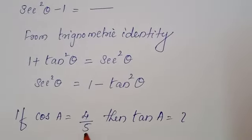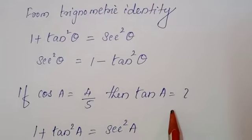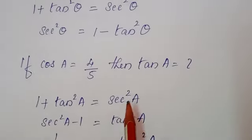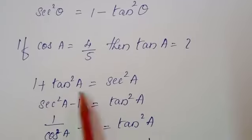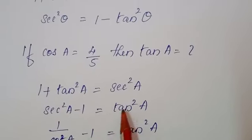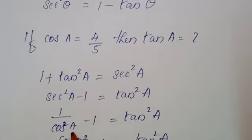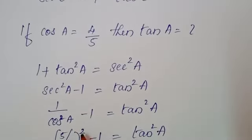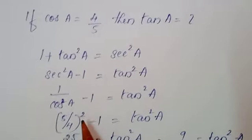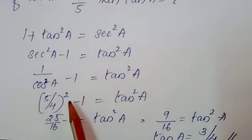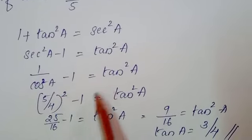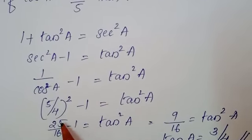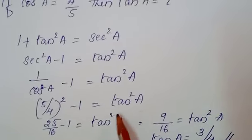And the third question is, if cos A equals 4 by 5, then tan A equals dash. 1 plus tan² A equals sec² A. So sec² A minus 1 equals what? tan² A. Then sec² A means what? 1 by cos² A. Then minus 1 equals tan² A. 1 by cos² A, we should substitute the value of cos A, that is 4 by 5. Then 4 by 5, the whole square minus 1 equals tan² A.